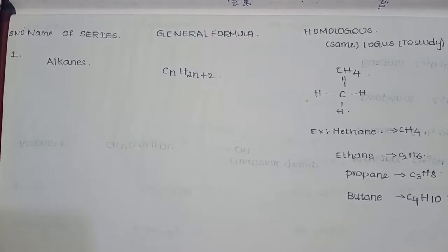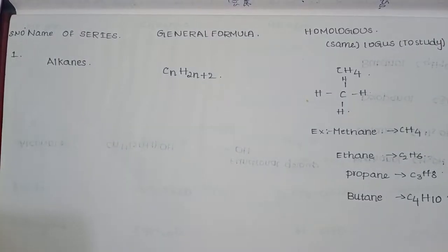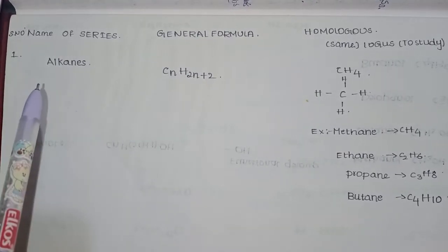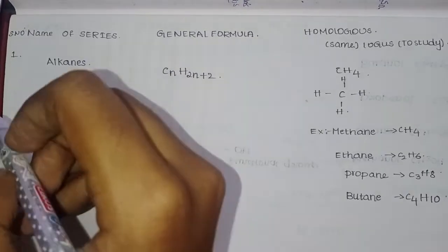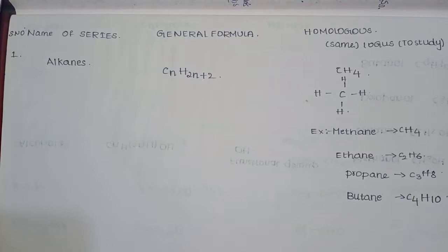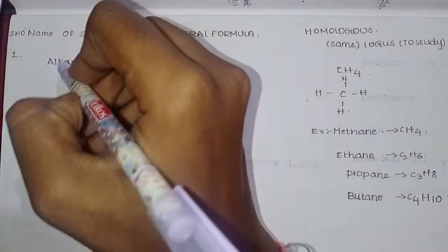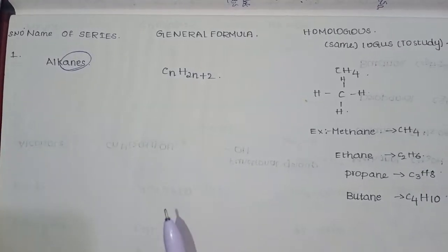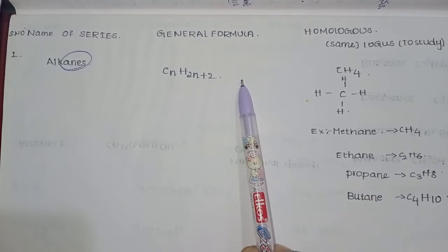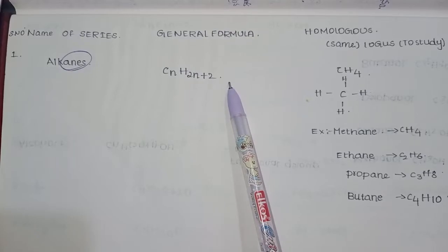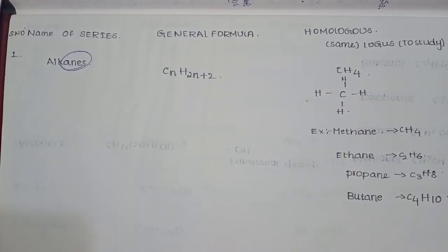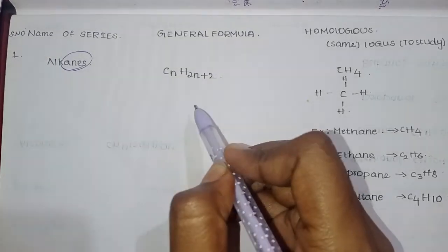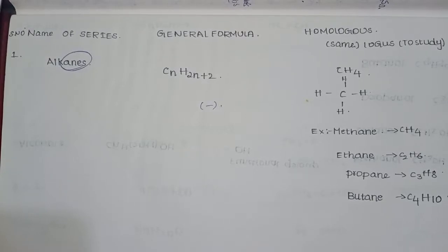First of all, let's discuss alkanes. Serial number one - the name of the series is alkane. It is the combination of alk plus ane. The general formula is CnH2n+2.